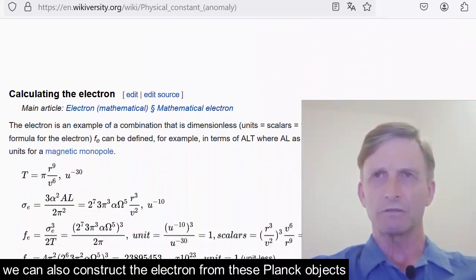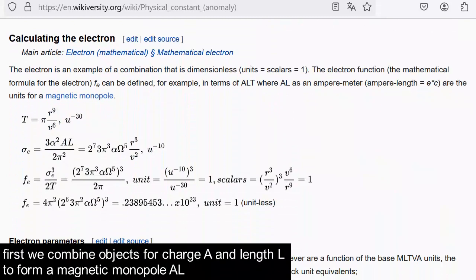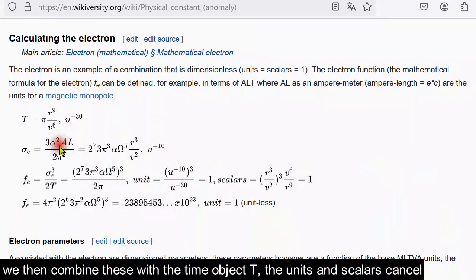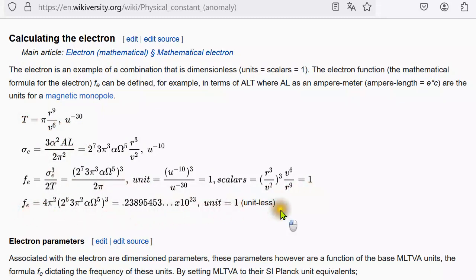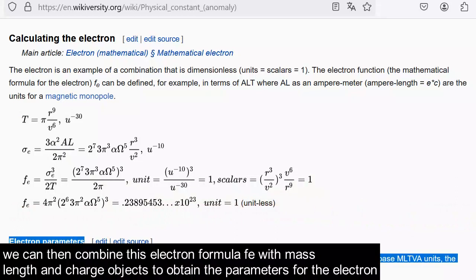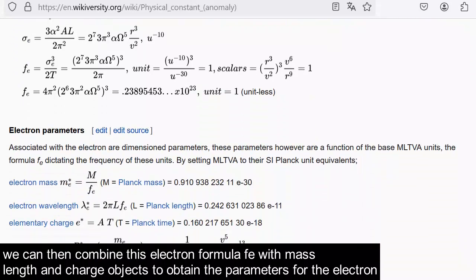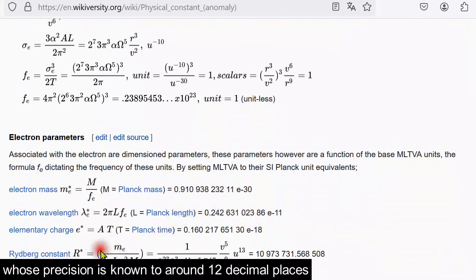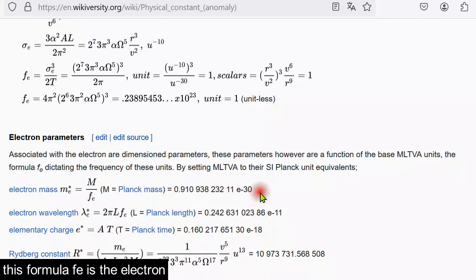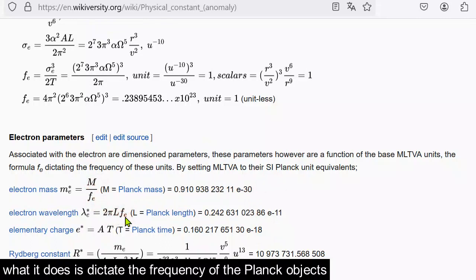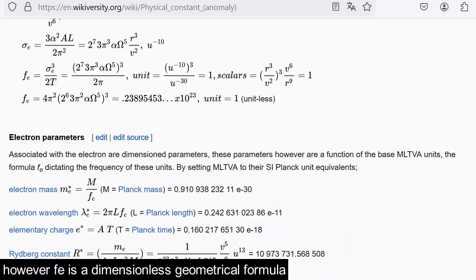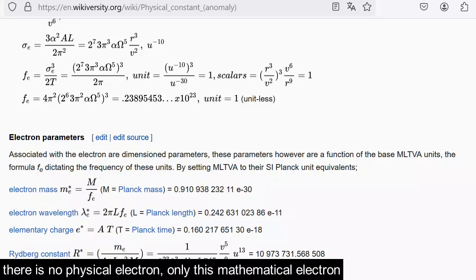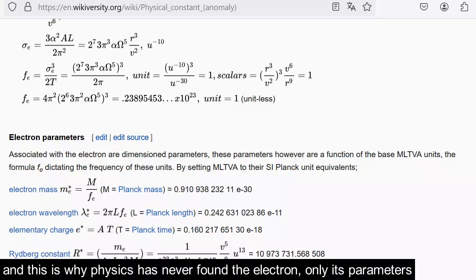We can also construct the electron from these Planck objects. First, we combine objects for charge and our length to form a magnetic monopole AL. We then combine these with a time object T. The units and scalars cancel, and we are left with a dimensionless geometrical object, if_e. We can then combine this electron formula if_e with mass, length, and charge objects to obtain the parameters for the electron. We can confirm accuracy also with the Rydberg constant, whose precision is known to around 12 decimal places. This formula if_e is the electron. What it does is dictate the frequency of the Planck objects to get what we define as electron mass, wavelength, and charge. However, if if_e is a dimensionless geometrical formula, there is no physical electron, only this mathematical electron. And this is why physics has never found the electron, only its parameters.